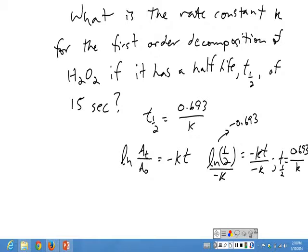So in this case, we have the half-life. We know that t½ is 15 seconds and that equals 0.693 over k, the little k rate constant.